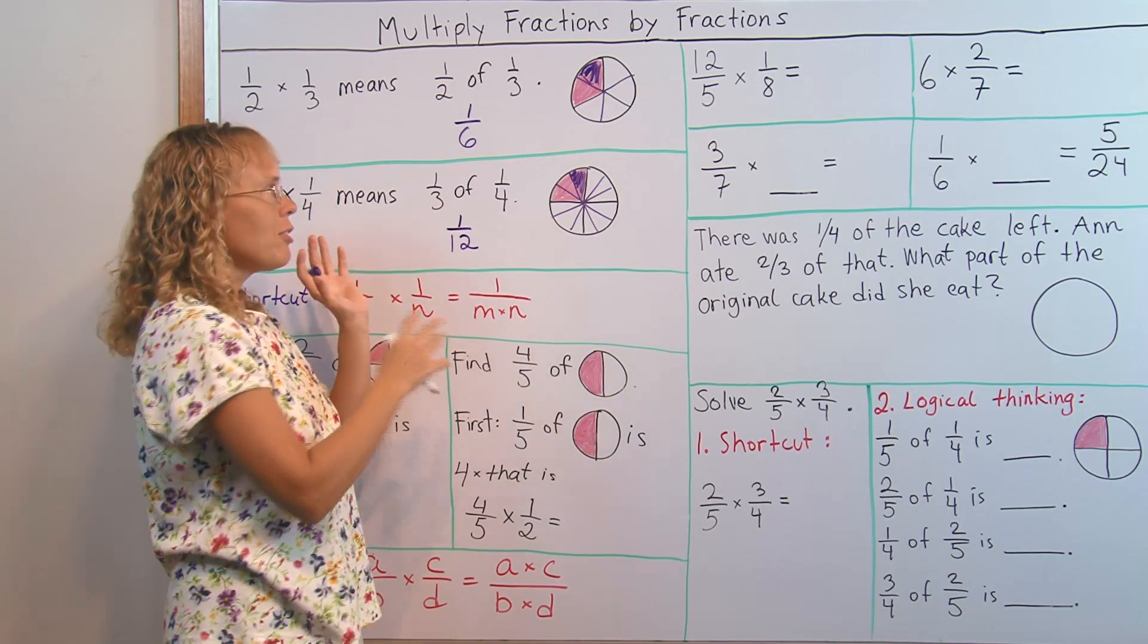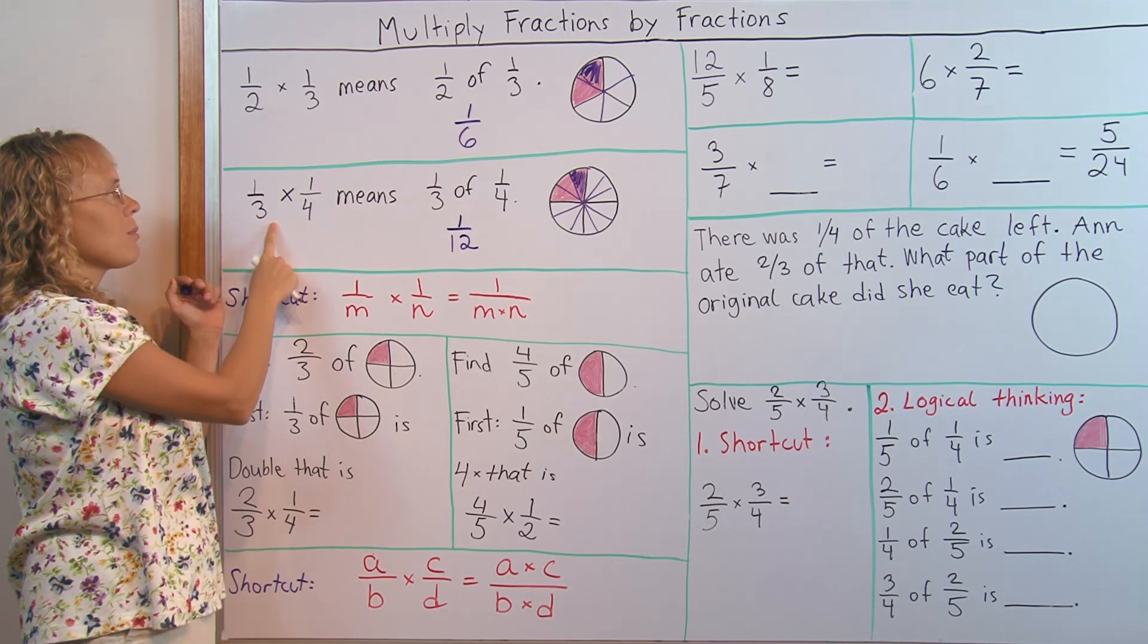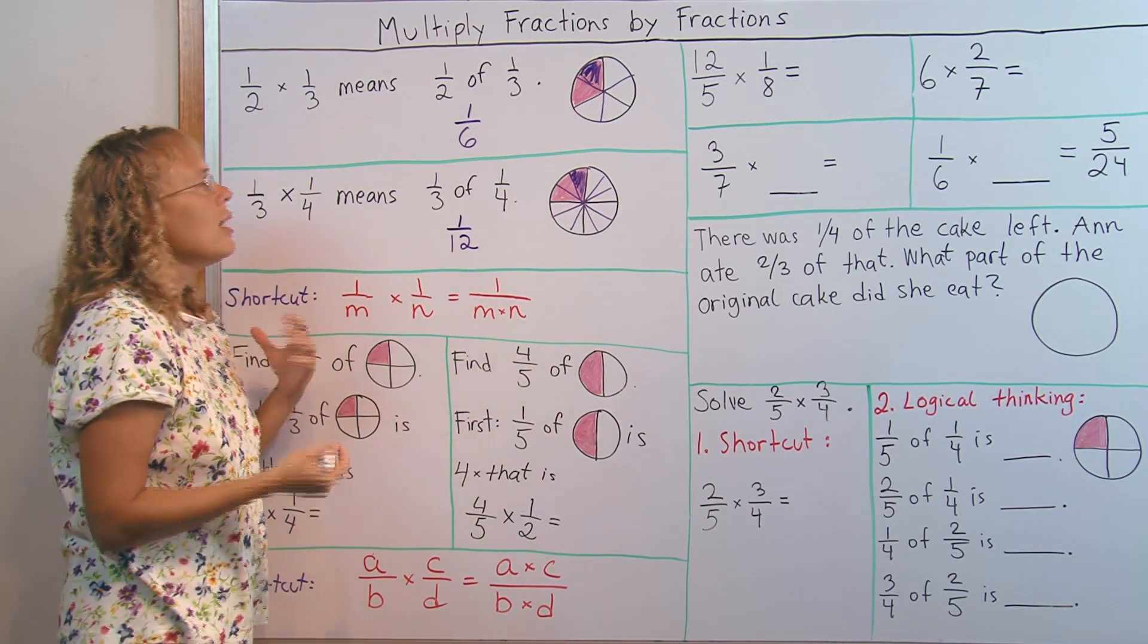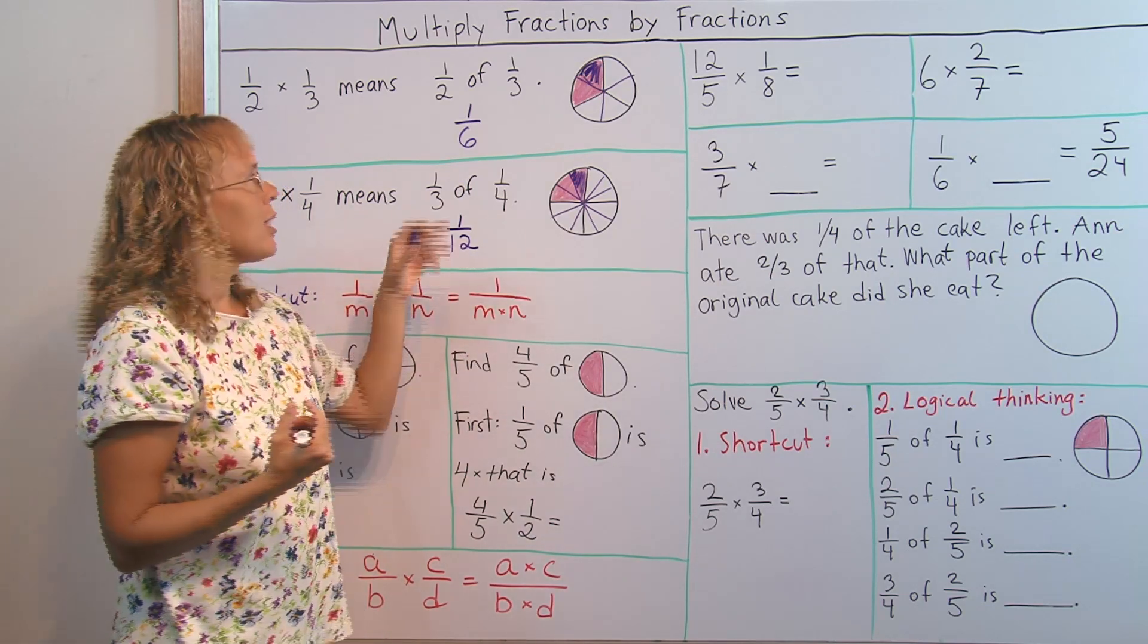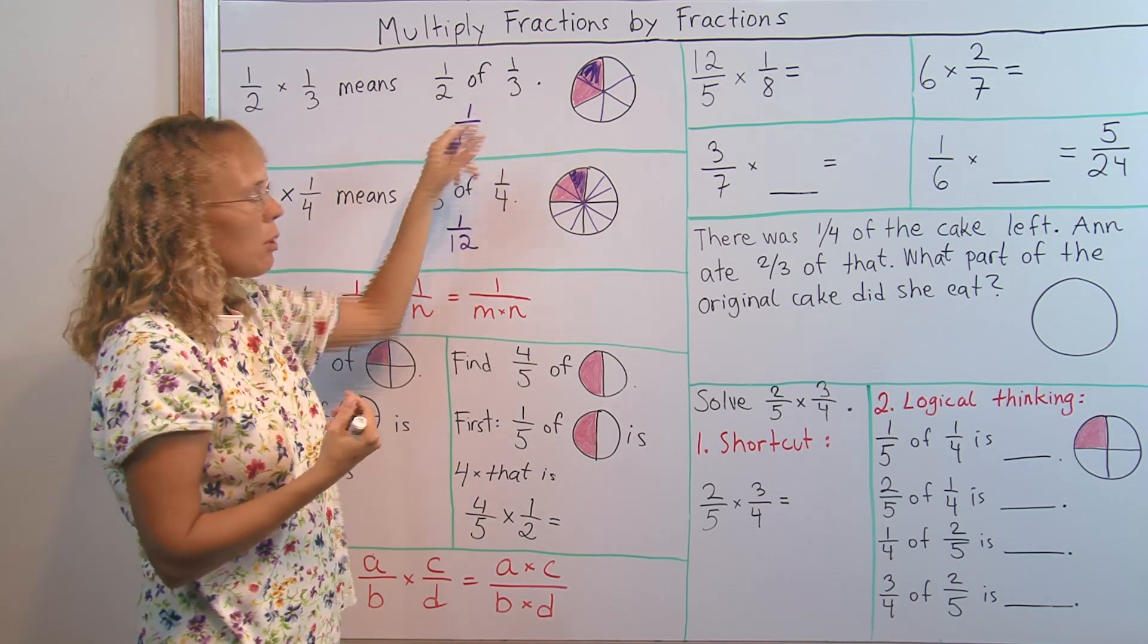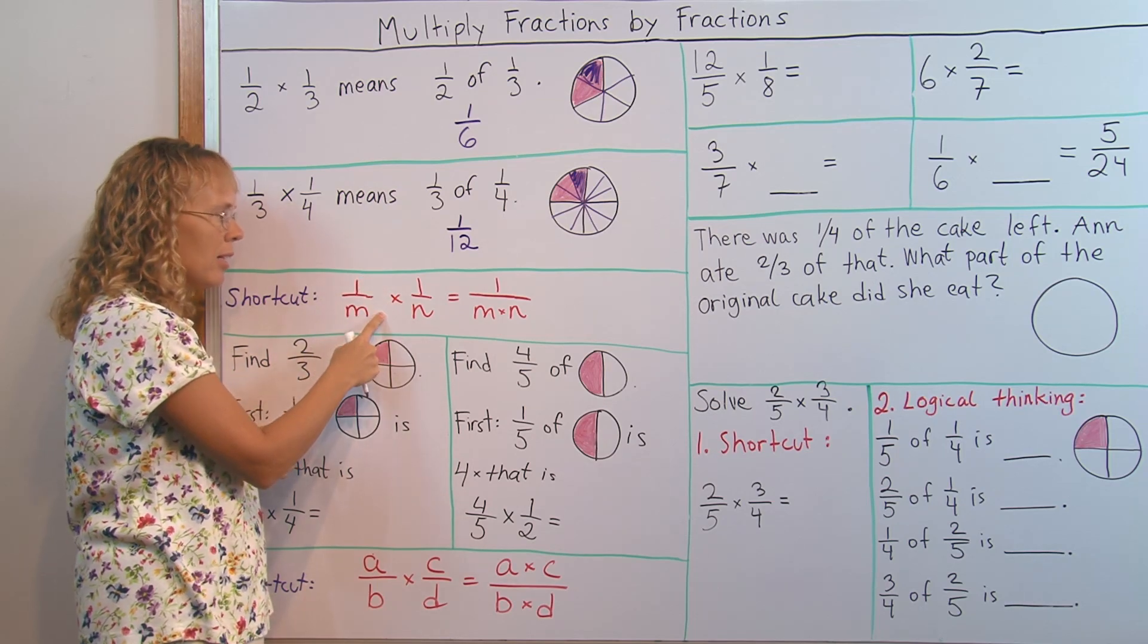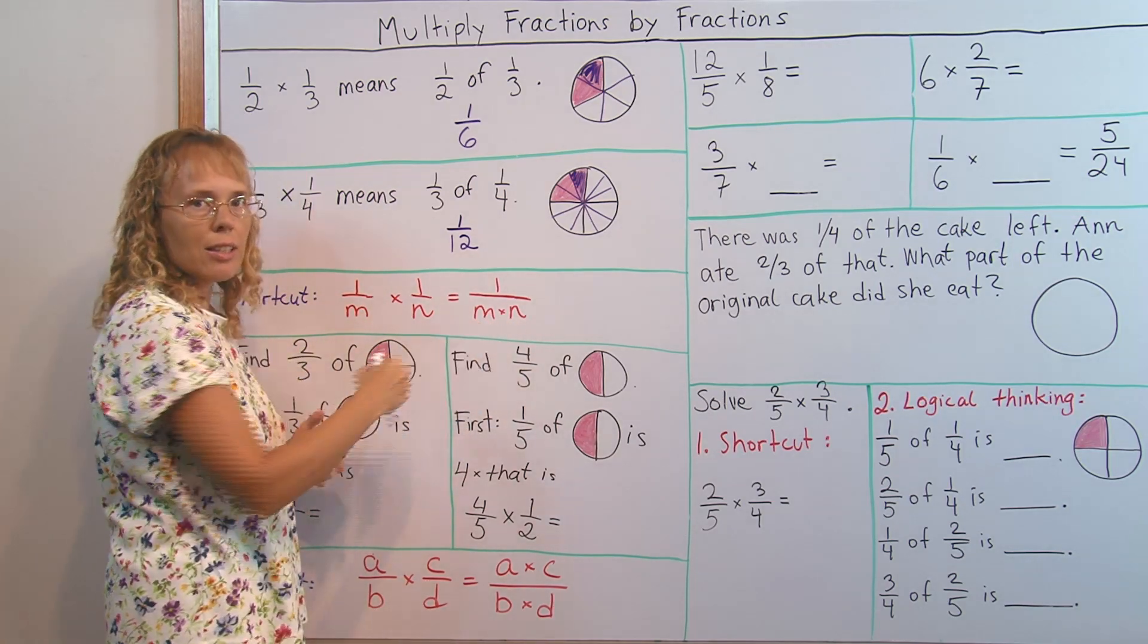After you give students several of these kind of exercises, where there's one over something times one over something, fractions of the form one over something, they will easily see that the answer always has the denominator where you multiply these two denominators. So we arrive at the shortcut that if the fractions are of this form one over something, then the answer will be just, you just multiply the denominators to get the answer.